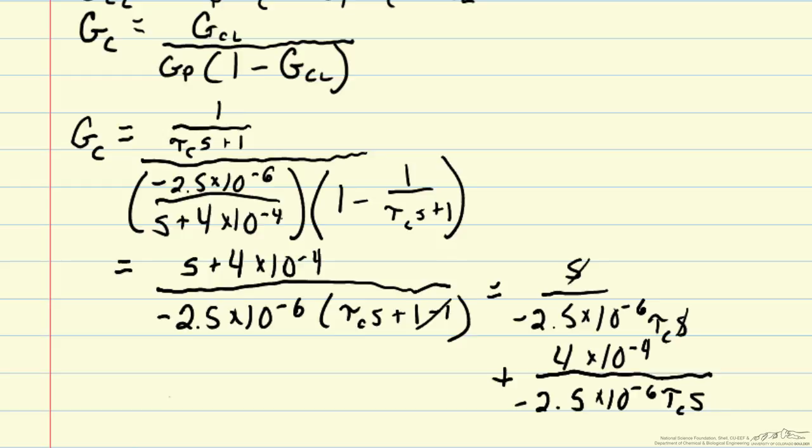So it turns out this first term is just going to be a constant and that's our proportional term or our p term.